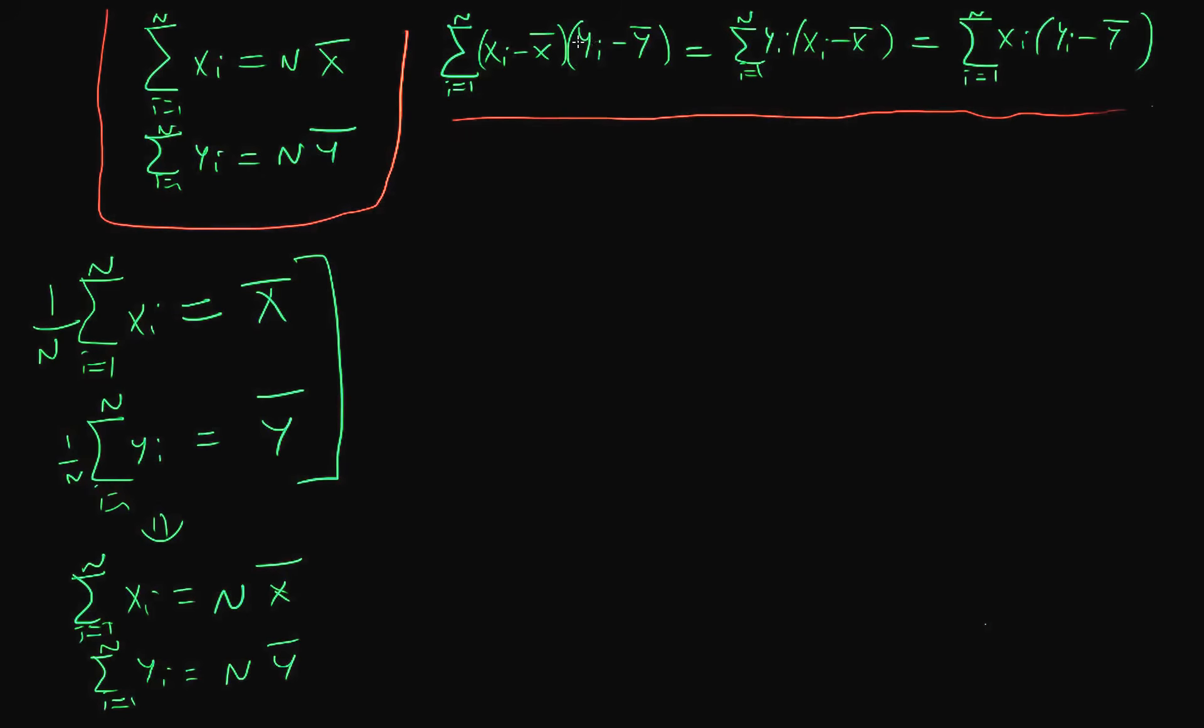Now we want to talk about this thing to the top left of the screen. I'm going to start out with our thing on the left-hand side. We're trying to simplify the sum of i equals 1 to n of (xi minus x bar) times (yi minus y bar).